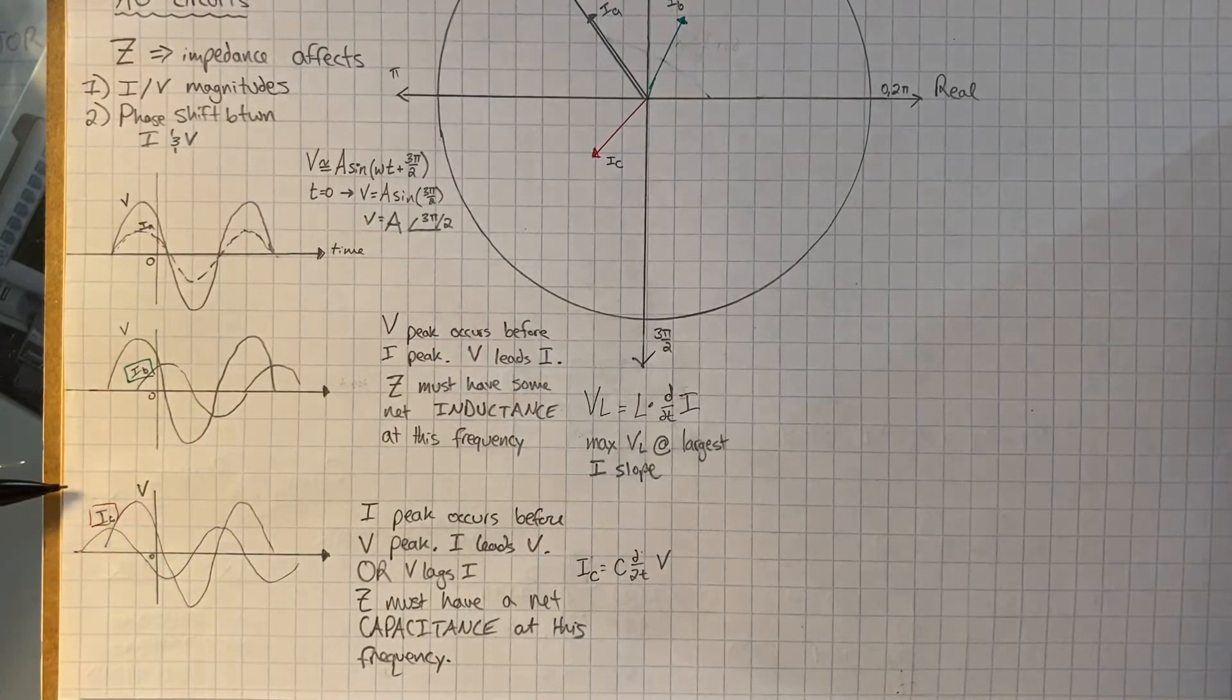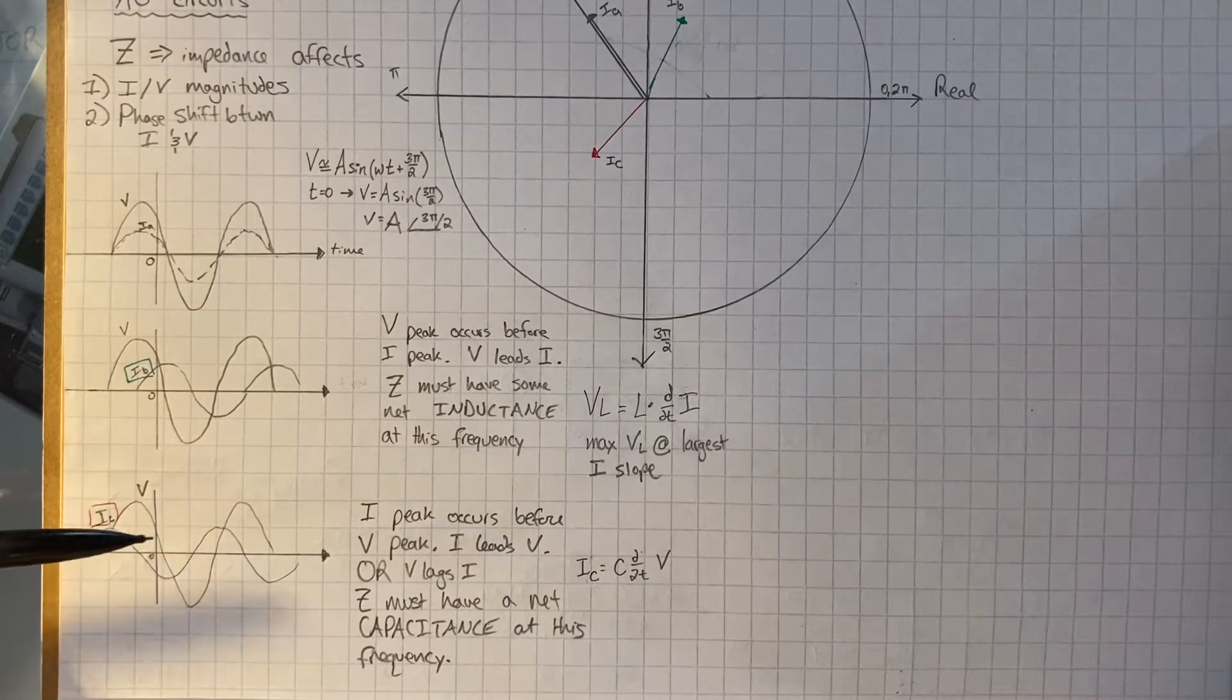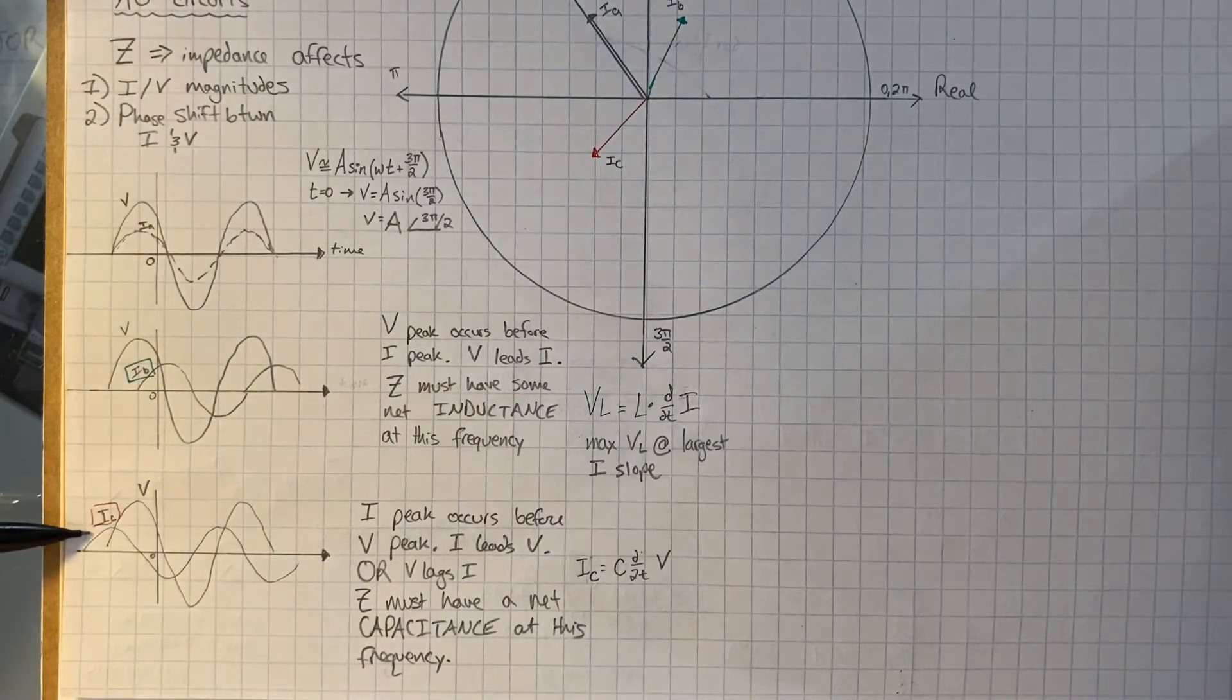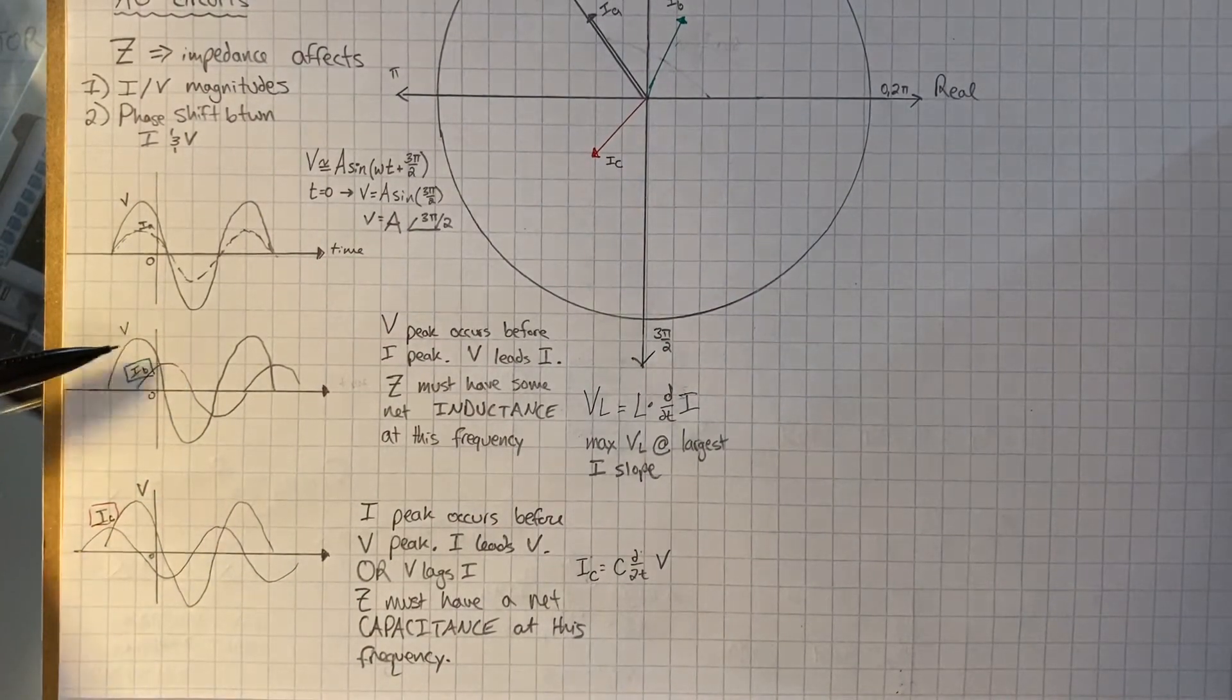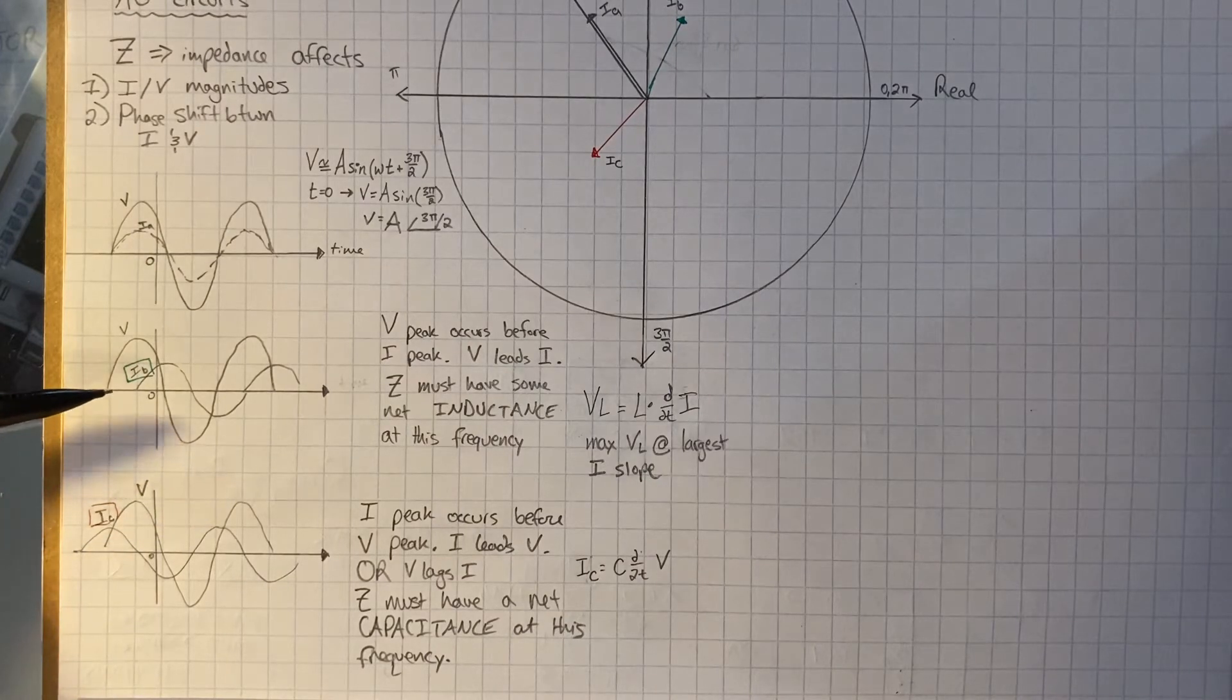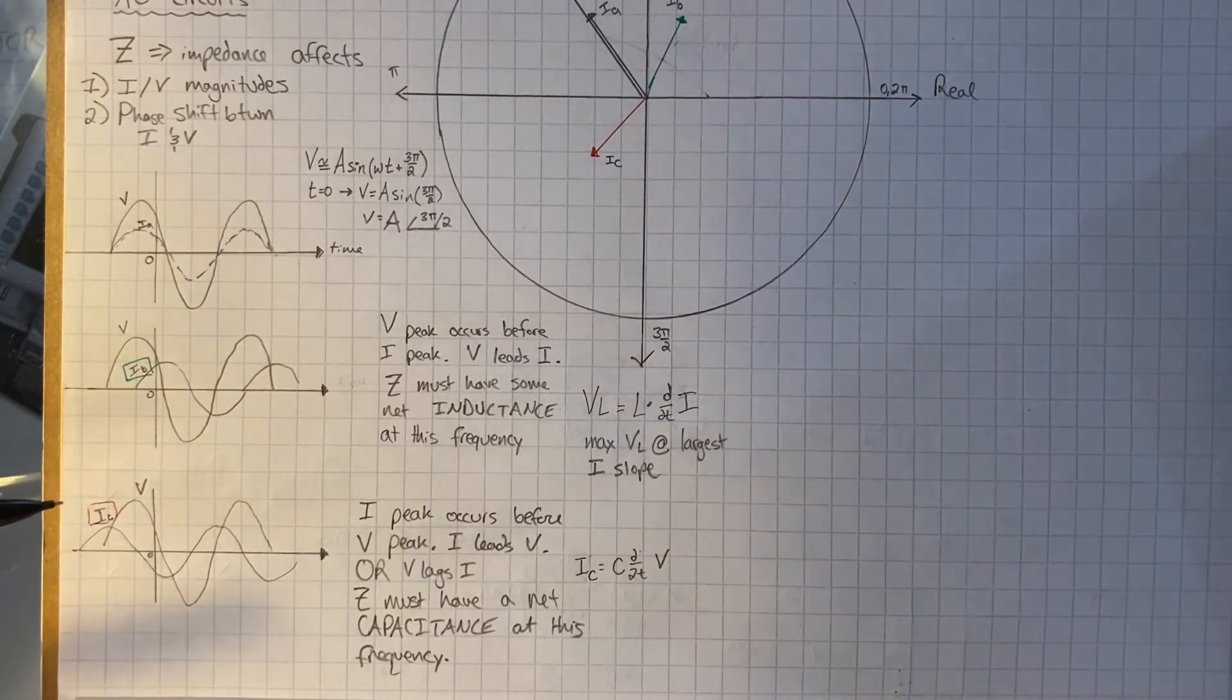Also, if we observe a relationship like this, where the current peak occurs before the voltage peak, we say that the current leads the voltage. You could also say the voltage lags the current. Here, we could say the current lags the voltage. When we talk about power factor later, you can see that we usually refer to the current. So this would be a lagging power factor. This would be a leading power factor, but we'll get to that later.